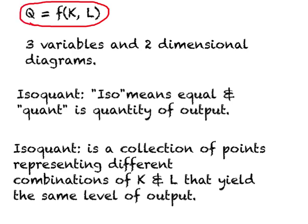Now, in the long run, all these things can vary — labor, capital, and quantity of output, all of them can change. We have been drawing diagrams where we can only represent two variables at a time, but here we are in a situation where we have three variables. So how do we resolve this problem and show this relationship on a two-dimensional diagram?